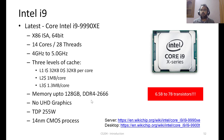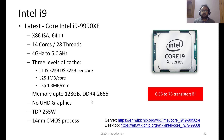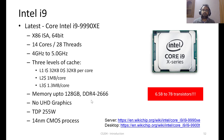To get an idea of scale: this single chip has nearly 7 billion transistors — roughly matching the entire human population on Earth, meaning there is approximately one transistor per person on just this one chip.